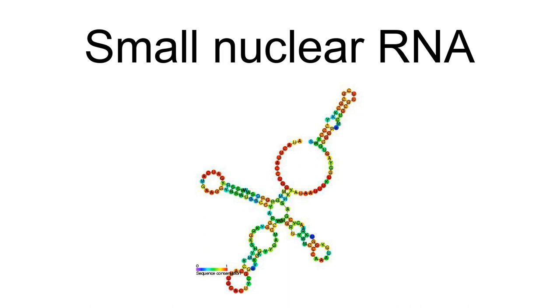snRNAs are always associated with a set of specific proteins, and the complexes are referred to as small nuclear ribonucleoproteins, snRNPs, often pronounced snurps. Each snRNP particle is composed of an snRNA component and several snRNP-specific proteins, including SM proteins, a family of nuclear proteins.